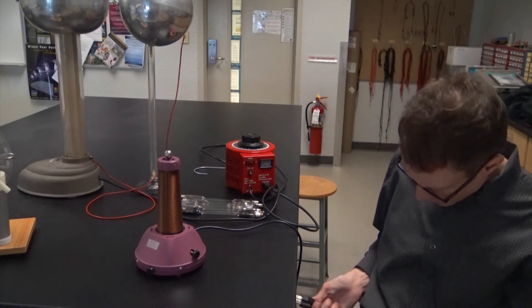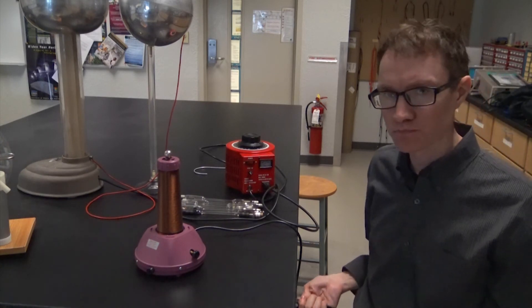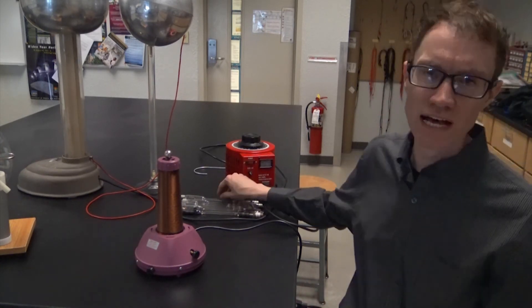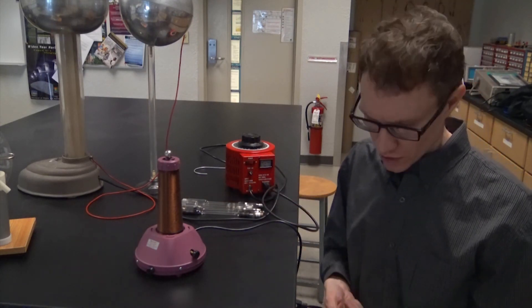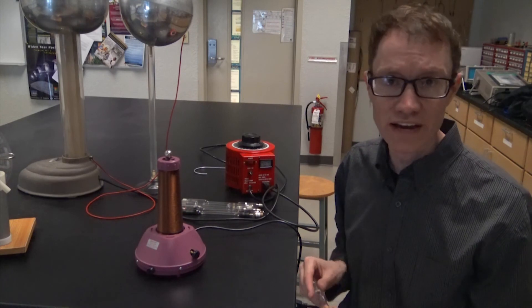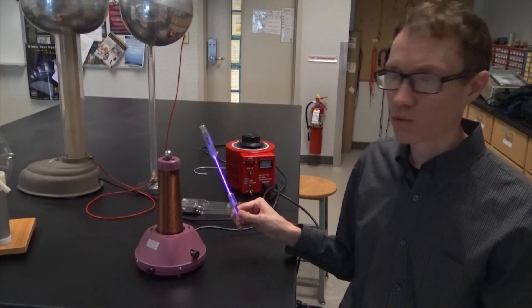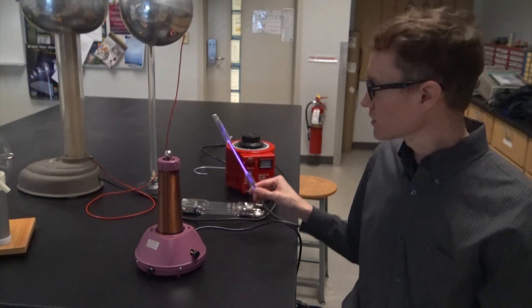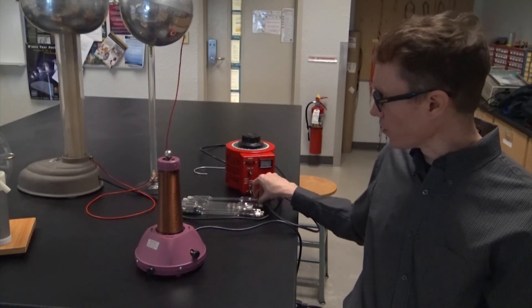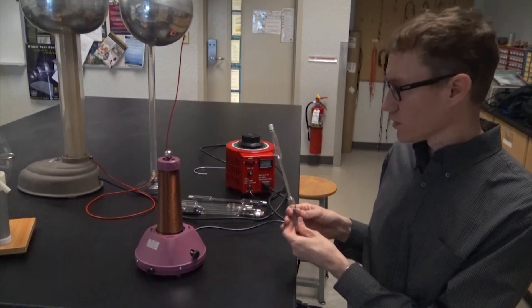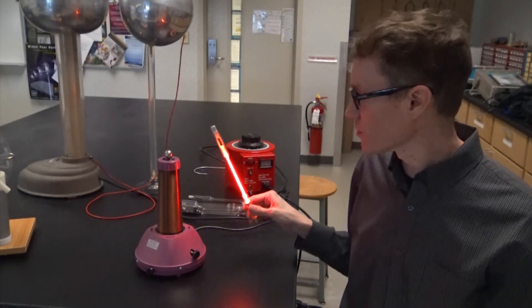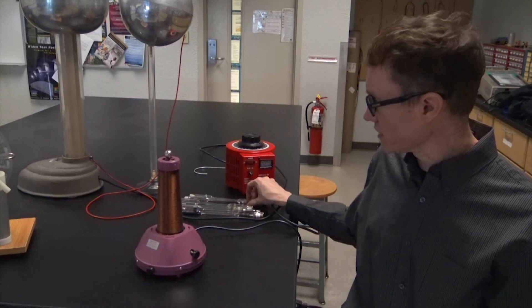When I plug it in, we're going to hear kind of a buzzing sound. I've got some glass tubes here filled up with various gases. If I hold the glass tubes near the Tesla coil, it'll ionize the gas inside the tube. So we'll start here with argon. That's kind of a purple glow. Neon glows very brightly, and it's very easy to ionize.